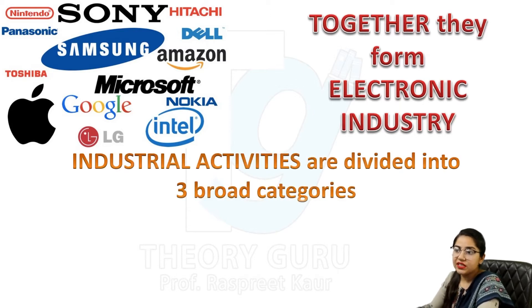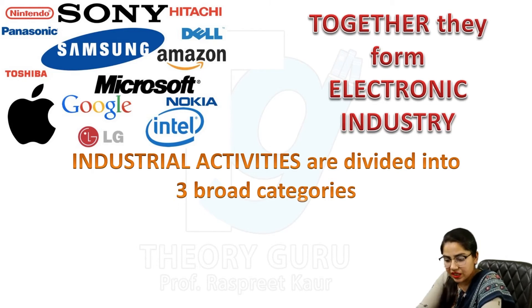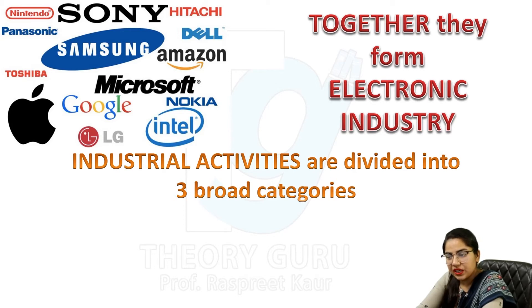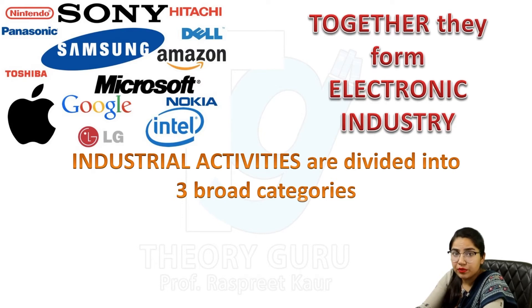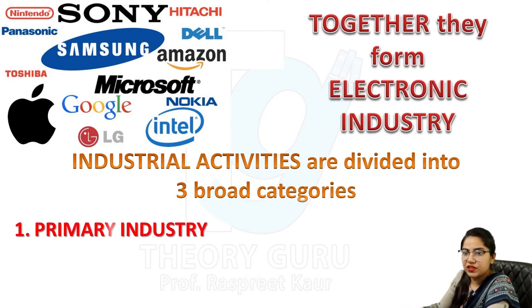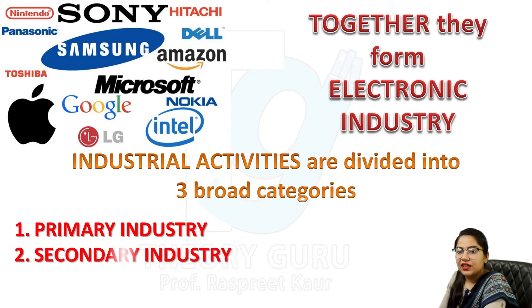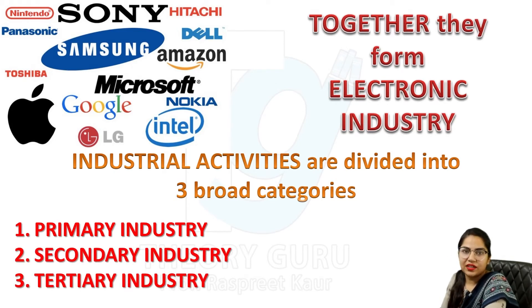Industry activities are further divided into three broad categories. So far we said that business activities are divided into industry and commerce, and within industry, two types of goods are produced — consumer and producer goods. Now, industrial activities are divided into three broad categories: first is primary industry, another is secondary industry, and the third one is tertiary industry.